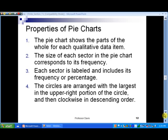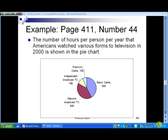In slide number 12, we've got some of the properties of pie charts. First, the pie chart shows the parts of the whole for each qualitative data item. The size of each sector corresponds to the frequency of the category, and each sector is labeled and includes either its frequency or its percentage. Finally, the circles are arranged with the largest frequency in the upper right portion of the circle and then clockwise in descending order. So the largest group is always in the upper right corner and they get smaller as we go clockwise around the pie chart.